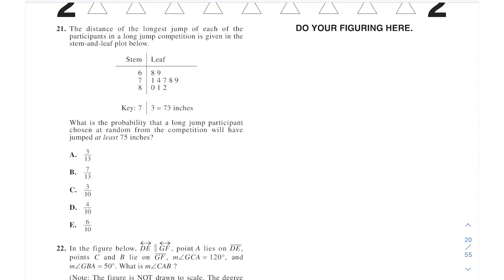For 21, here we see this stem and leaf table. And they want to know the probability that a long jump participant chosen at random will have jumped at least 75. So that means 75 or above. So that would be these results in here. Seven as your stem with a leaf of seven means like 77, 78, 79, and then 80, 81, and 82. So there are a total of six results out of those extra four, 10 total. So it'd be six tenths for that.